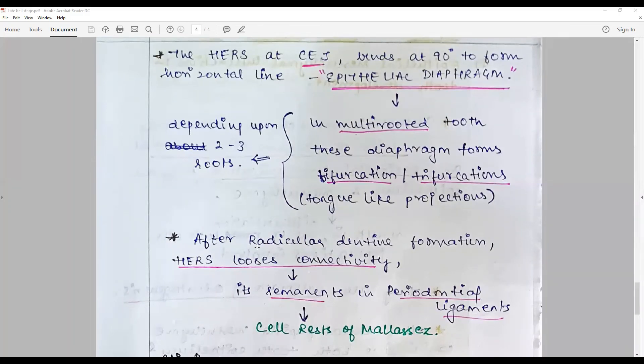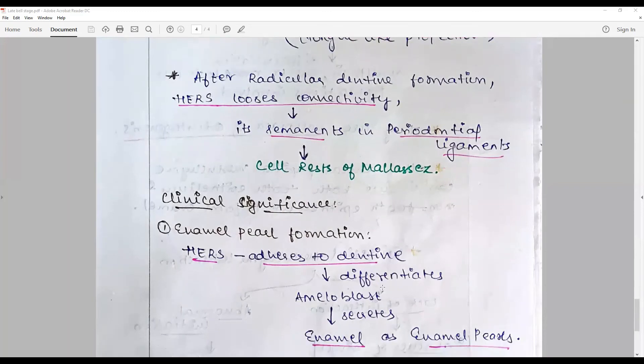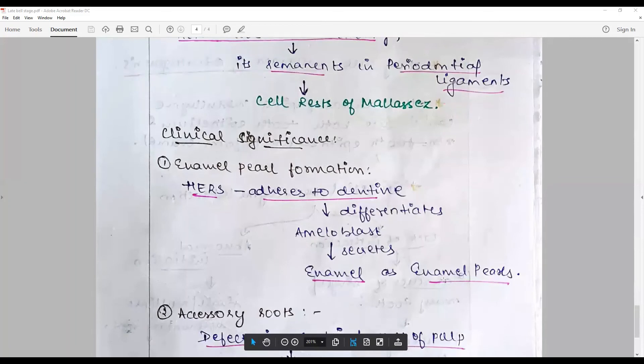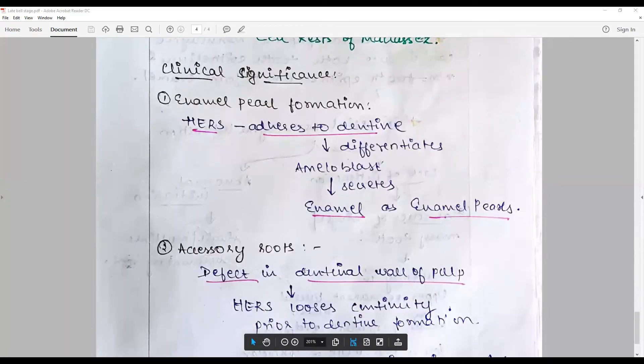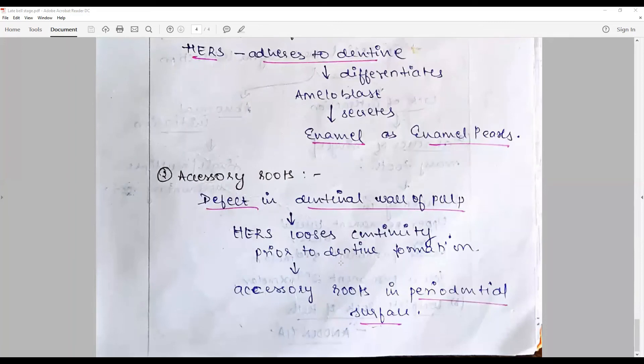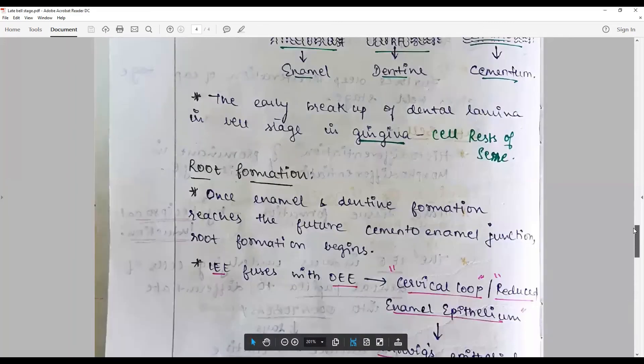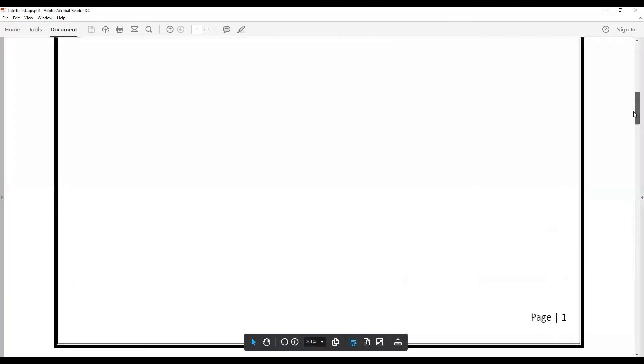The HERS loses their connectivity, and some of which will be found as remnants in the periodontal ligaments and called as the cell rest of Malassez. The clinical significance: if the HERS adheres to dentine, they may differentiate into ameloblast, secrete enamel and form enamel pearls. If there is a defect in the dentinal wall of pulp, the HERS lose early connectivity and form accessory roots or root canals.